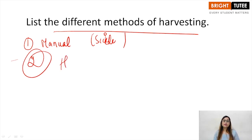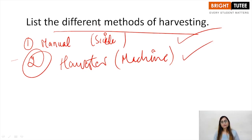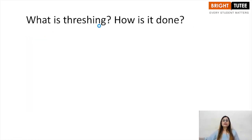Second is with the help of a harvester. It is a machine, as I have already explained in the lecture. So there are only two methods: first one is manual, second is harvester.